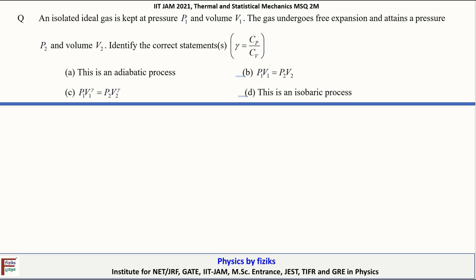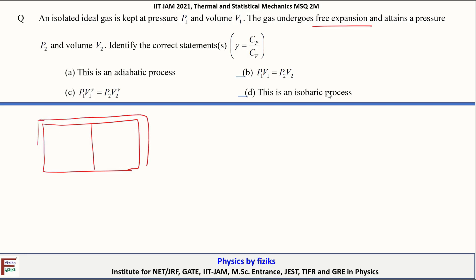Next: an isolated ideal gas at pressure P1 and volume V1 undergoes free expansion, attaining pressure P2 and volume V2. Consider a container divided into two compartments: one holds the ideal gas at P1 and V1, and the other is vacuum. The entire system is isolated from the surroundings, so there is no energy loss when the gas expands.